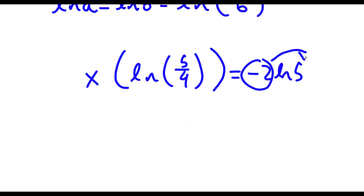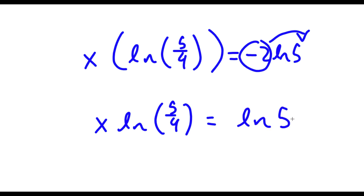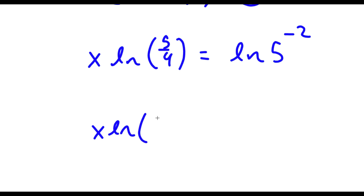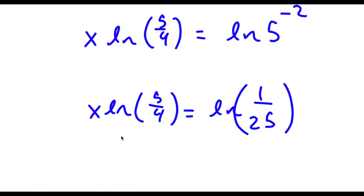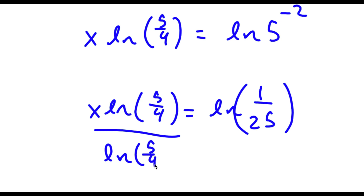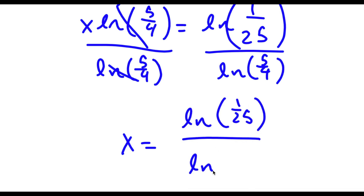Now using the logarithm property that ln a minus ln b equals ln of a over b, ln 5 minus ln 4 becomes ln of 5 over 4. I can also move the negative 2 to the front as an exponent, so the right side becomes ln of 5 to the power of negative 2. Since 5 to the power of negative 2 equals 1 over 25, this becomes ln of 1 over 25. Dividing both sides by ln of 5 over 4, x equals ln of 1 over 25 divided by ln of 5 over 4. So that's my answer.